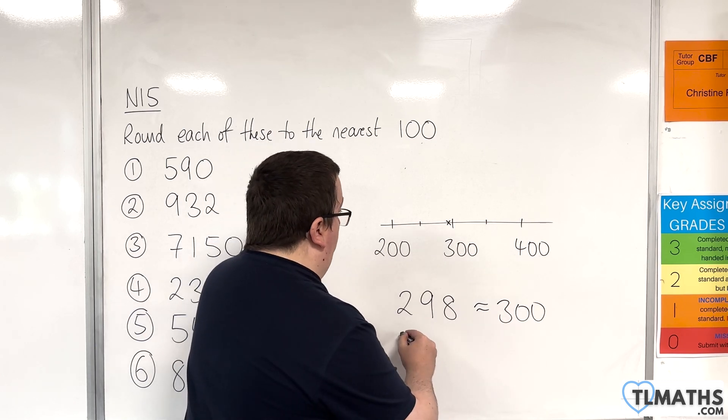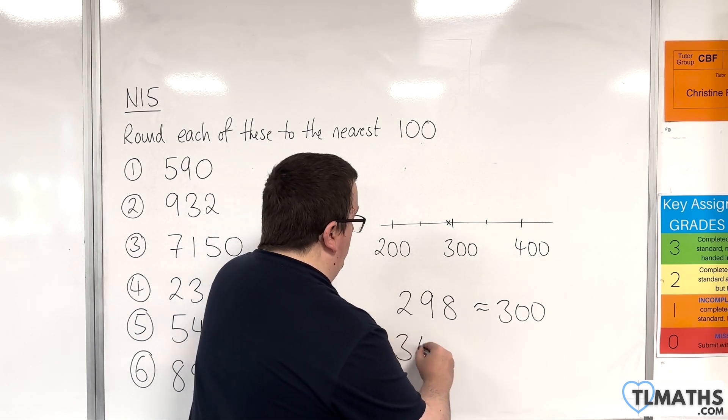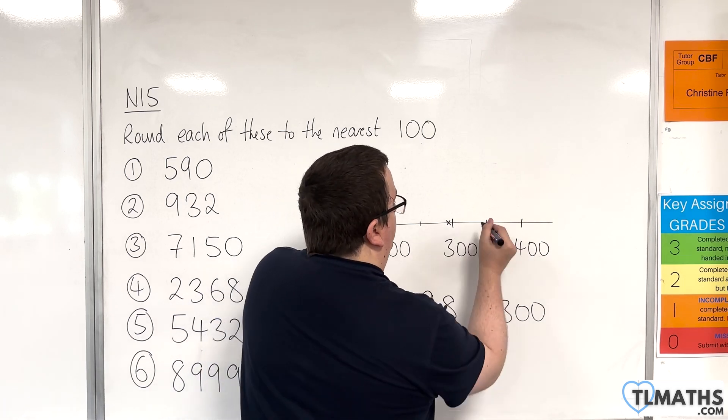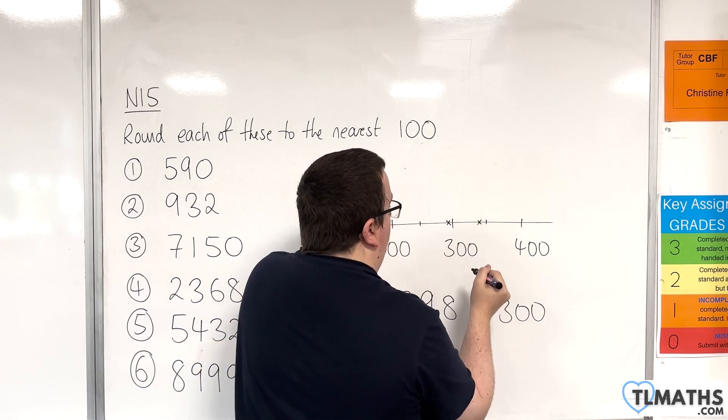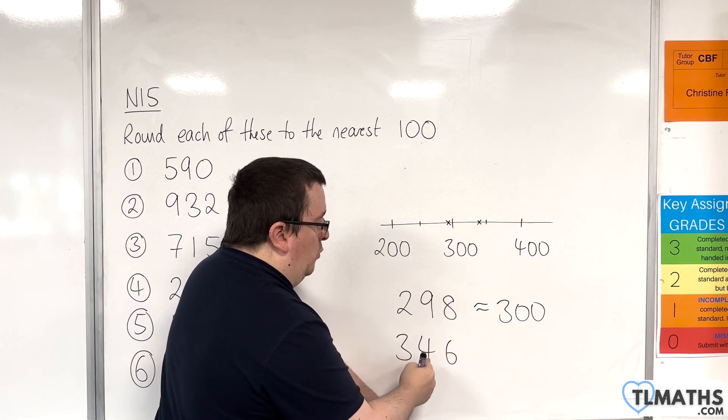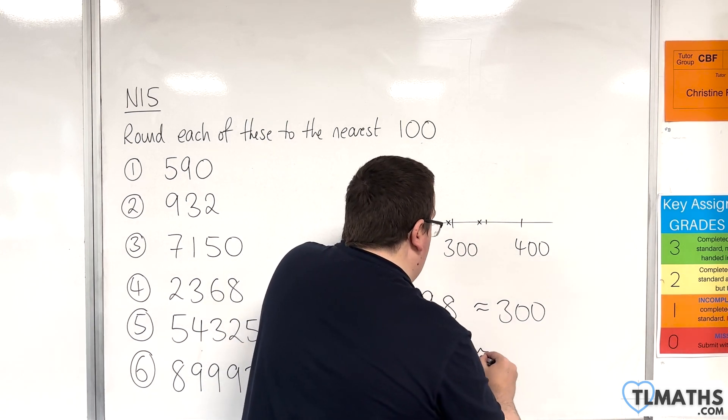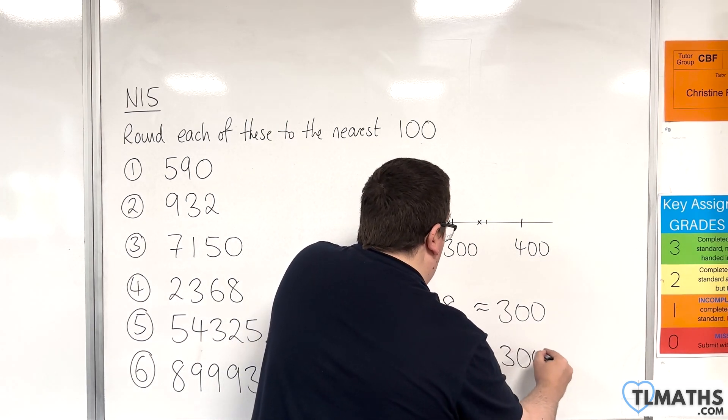If I had let's say 346, then 346 is going to be somewhere around there. So I look at the hundreds column, I look one to the right, it's less than 5, so I round it down to 300.